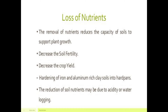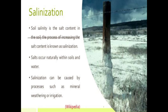The second point is salinization. What is meant by salinization? It is the accumulation of salt on soil, as also seen in the photographs in this slide. Soil salinity is the salt content in the soil. The process of increasing salt content is known as salinization. A white layer forms on the upper surface of the soil — that is salt. Salts occur naturally within soil and water. Salinization can be caused by processes such as mineral weathering or irrigation.